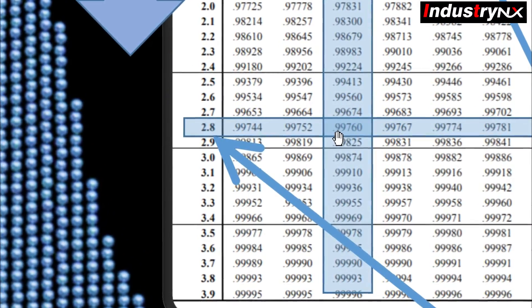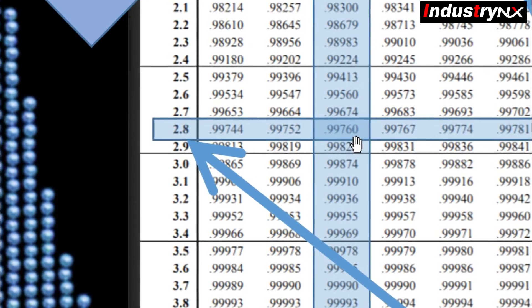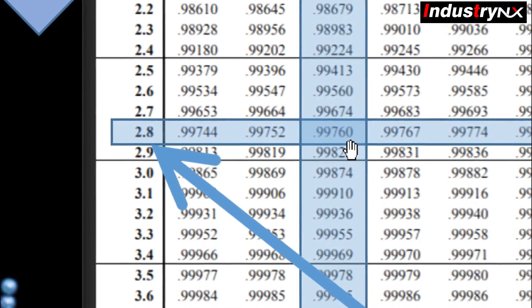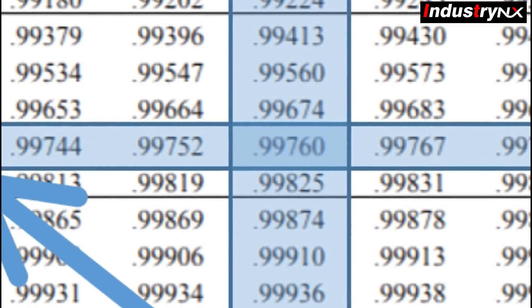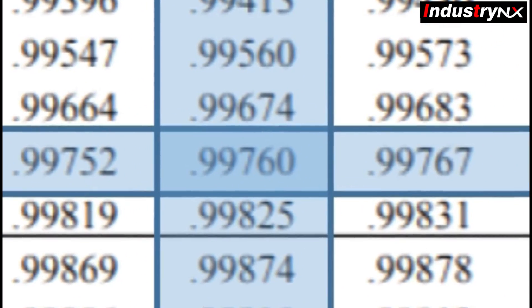0.9976, that is 99.76%. This is nothing but p-value, that is probability for given z-score.